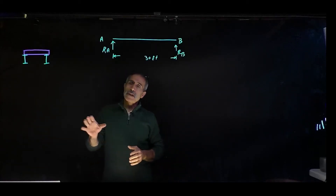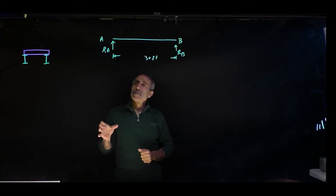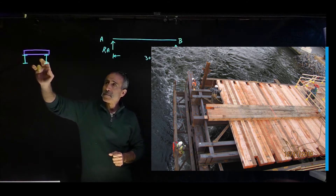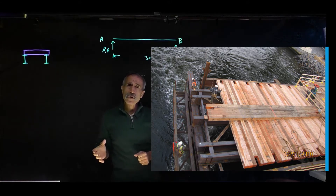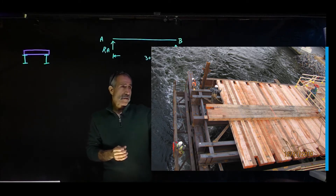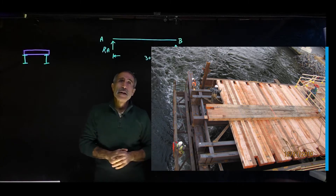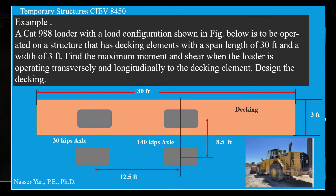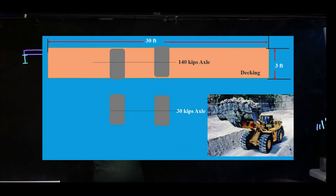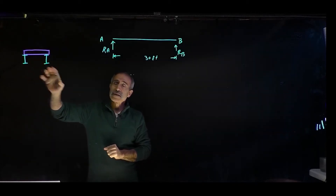Hello and welcome back. We're going to continue with a temporary structure. This time we're going to design two beams and wooden planking on top for a moving construction load — similar to what we have on a board for crane loading. I'm going to use a 988 CAT loader. The loading diagram shows the front axle is 140 kips (70 kips per tire) and the back axle is about 30 kips. This loader will be moving along a 30-foot platform, going longitudinal and also transverse — turning, loading, and dumping.